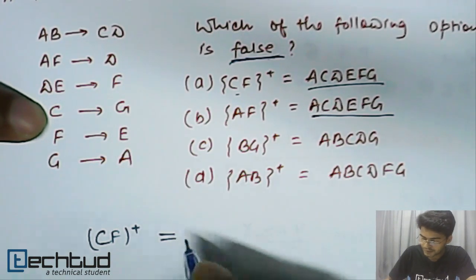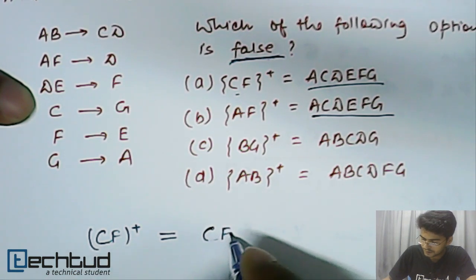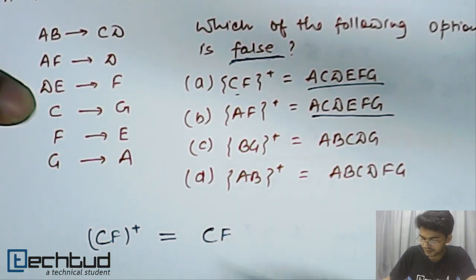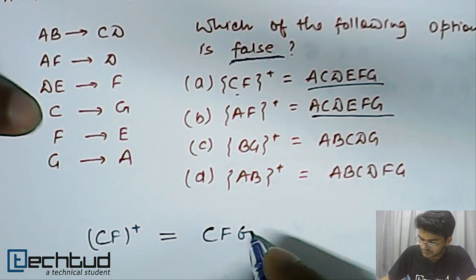And from reflexive rule, we know that CF can always determine CF. So, CF is already there. Now, this C can determine G. So, G will be there.